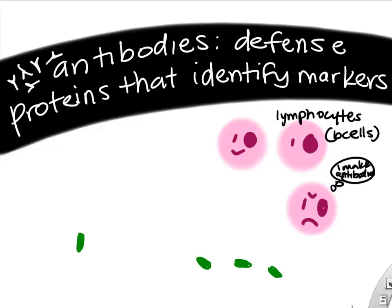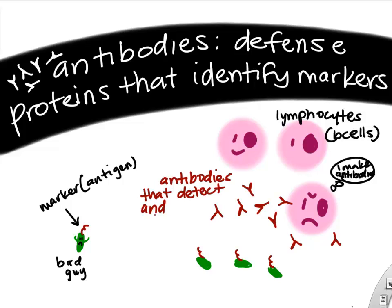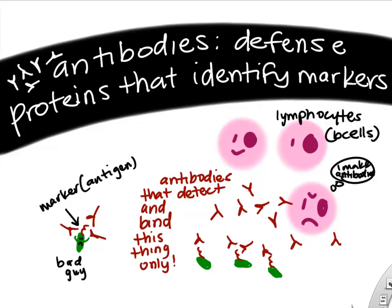Let's say you're infected with a bacteria and on the bacteria's surface is a little marker — let's say it's a carbohydrate. Your lymphocytes will recognize that marker or antigen as being from something foreign, a bad guy, and their response is going to be to make lots and lots of specific antibodies that can detect and bind to that marker molecule on the bacteria and only that marker molecule. This identifies the bacteria as bad and helps our immune system defend us and destroy those bacteria.